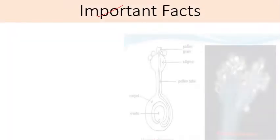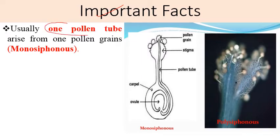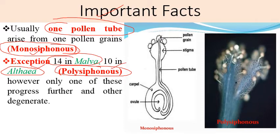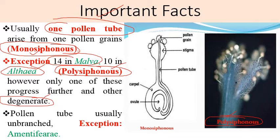Usually one pollen tube arises from the pollen grain, which is known as monosiphonous. But there are some exceptions: 14 pollen tubes in Malva, 10 pollen tubes in Liliaceae. The term used for this is polysiphonous, where poly means many and siphon means tube-like structure. However, only one of these progresses further and the others degenerate. The pollen tube is usually unbranched; the exception is branched pollen tube found in the family Amentiferae.